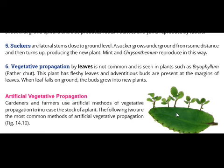We have learned about natural vegetative propagation and its six methods: bulbs, corms, rhizomes, stem tubers, suckers, and leaves. We studied different examples and diagrams and learned which part of each plant is involved. Inshallah, in the next lesson we will see the topic of artificial vegetative propagation. Thank you.